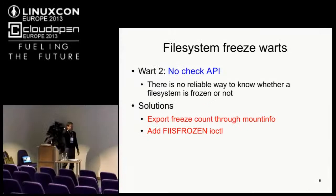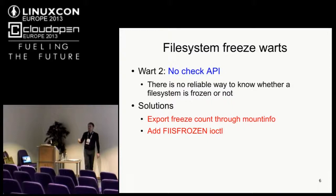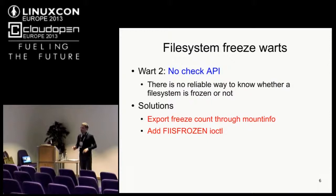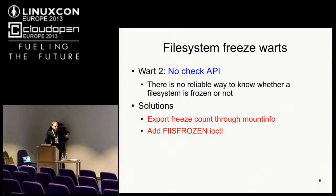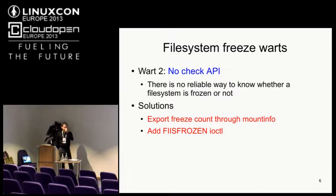Another problem with the current API is that there's no check API. There's no reliable way to know whether a file system is frozen or not, so you have to keep track of the file system state yourself. Maybe you made a mistake using a script and ended up freezing several file systems — there's no way to know what happened. You can freeze and unfreeze the file system, but you cannot check the current state. This is quite easy to fix. I posted patches that add a new IOCTL to check the file system freeze state, and also a patch to export the freeze count through mountinfo.